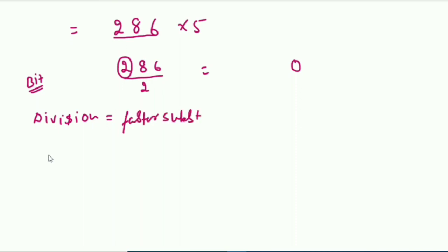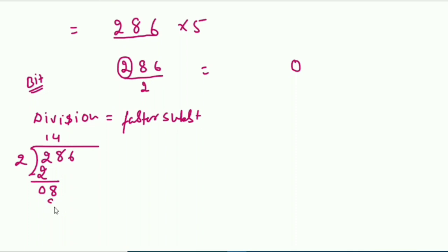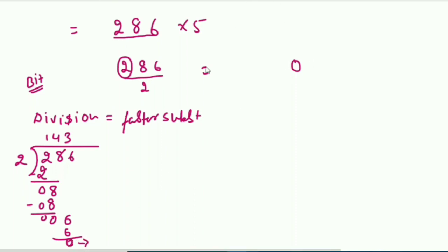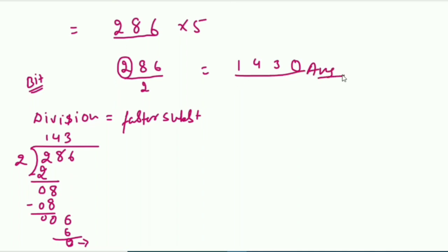I want to divide 286 by 2. Division is nothing but faster subtraction. Going digit by digit: 2 divided by 2 is 1, remainder zero. Bring down 8: 8 divided by 2 is 4, remainder zero. Bring down 6: 6 divided by 2 is 3, remainder zero. Since it's an even number, the answer is 1430.